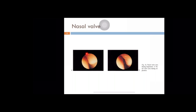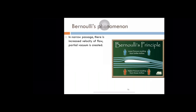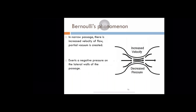This is the nasal valve area — during inspiration you can see how collapsed it is, and during expiration it is completely opened up. When there is increased resistance at the nasal valve area, a negative pressure is created in the region of the valve — this is Bernoulli's phenomenon. When there is increased flow through a narrowed area, there is reduced pressure in that area, sometimes even negative pressure. This exerts negative pressure on the sidewalls of the nasal valve area, leading to nasal valve area collapse, mucosal edema, and even polyp formation.